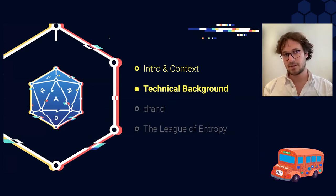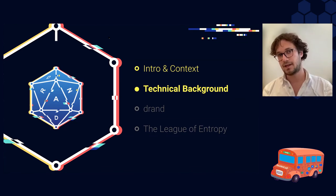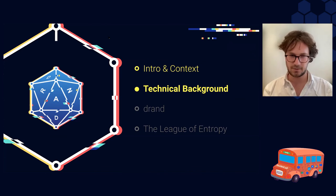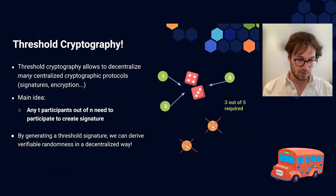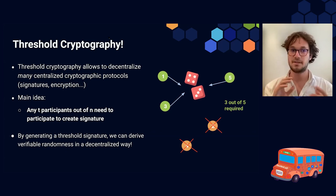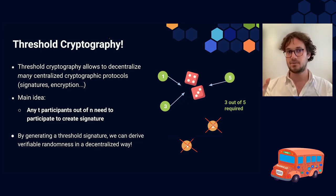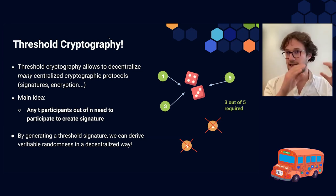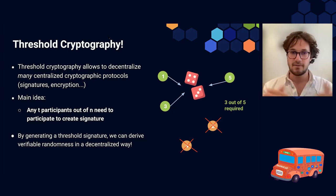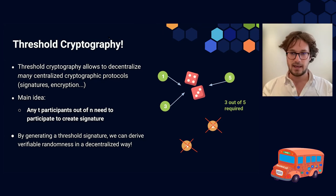Now I'm going to talk about the cryptographic background so you can better understand DRAND. One alternative method to generate randomness is to use threshold cryptography. Threshold cryptography allows us to decentralize many centralized protocols, for example signature generation. What threshold means here is that we require any T out of N participants to create the signature. Any subset of T participants will be able to generate the signature. If there are fewer than T, no signature can be generated.